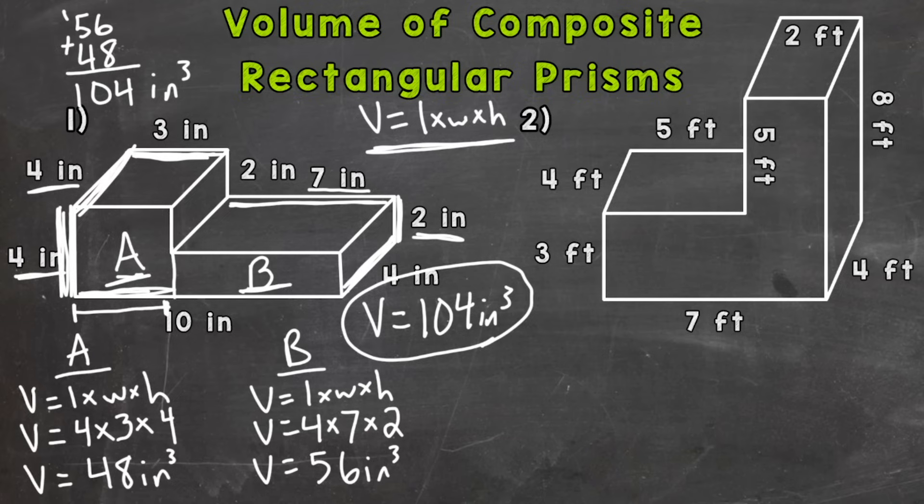Oh, actually, before we move to number two, I do want to mention something for number one. And this actually applies to all of the composite rectangular prisms. There is more than one way to cut them or split them into two rectangular prisms. So for number one, I have a left and a right. I could have, if you take a look where my letter A is, I could have cut it here so I had a top and a bottom rectangular prism.